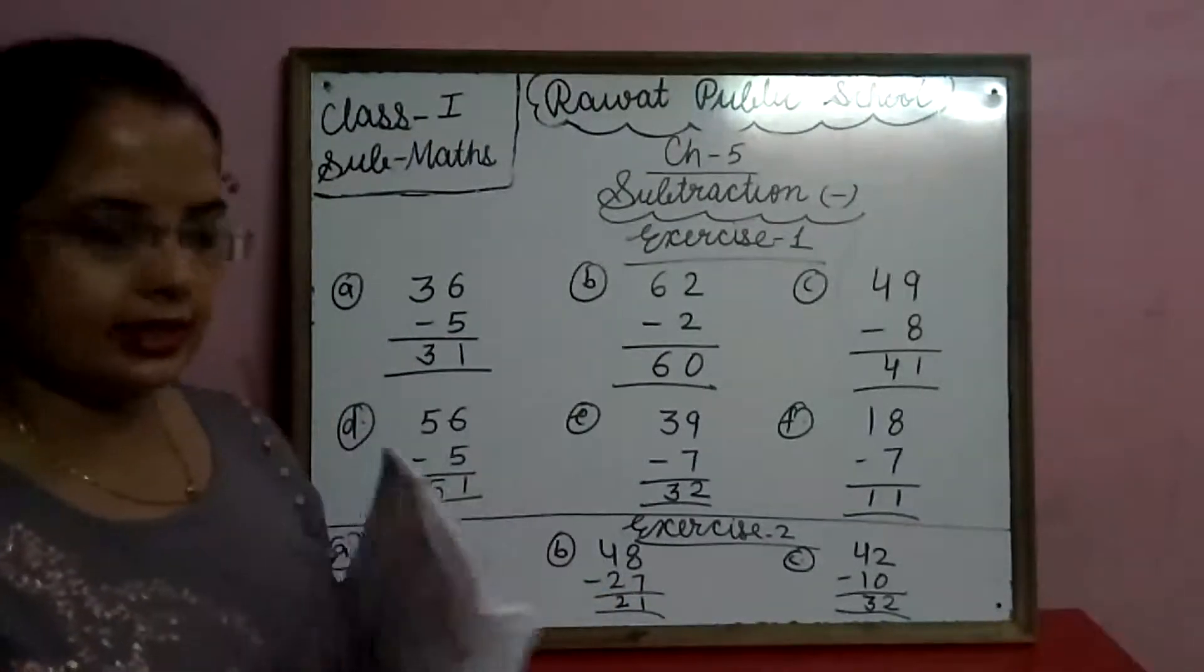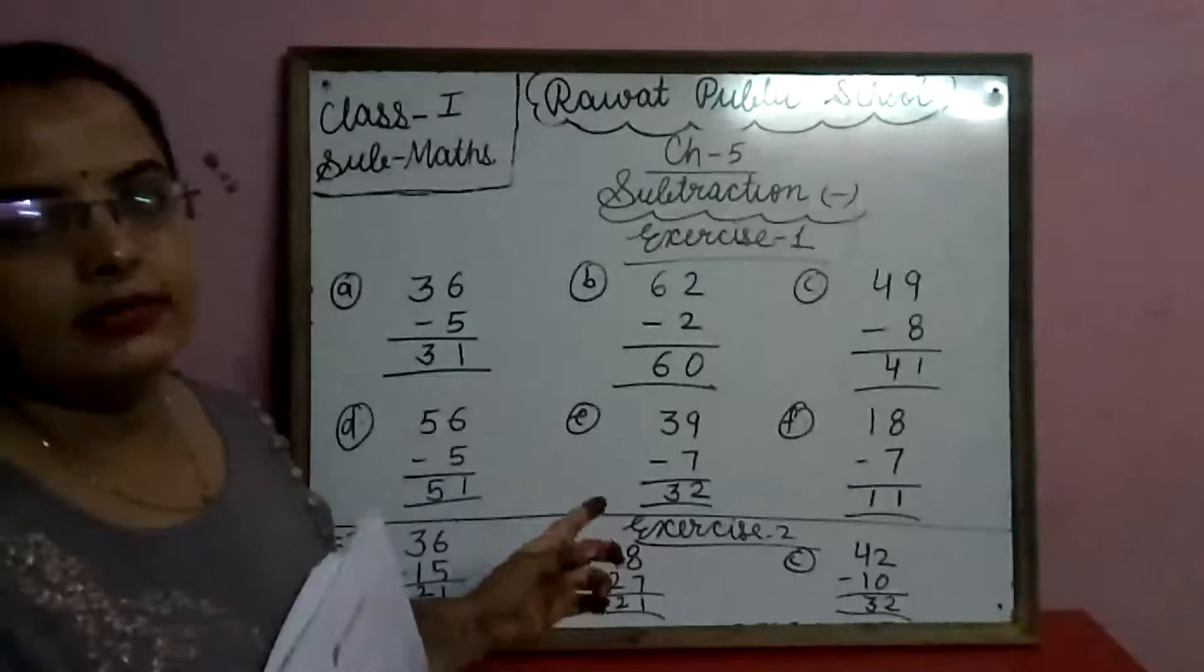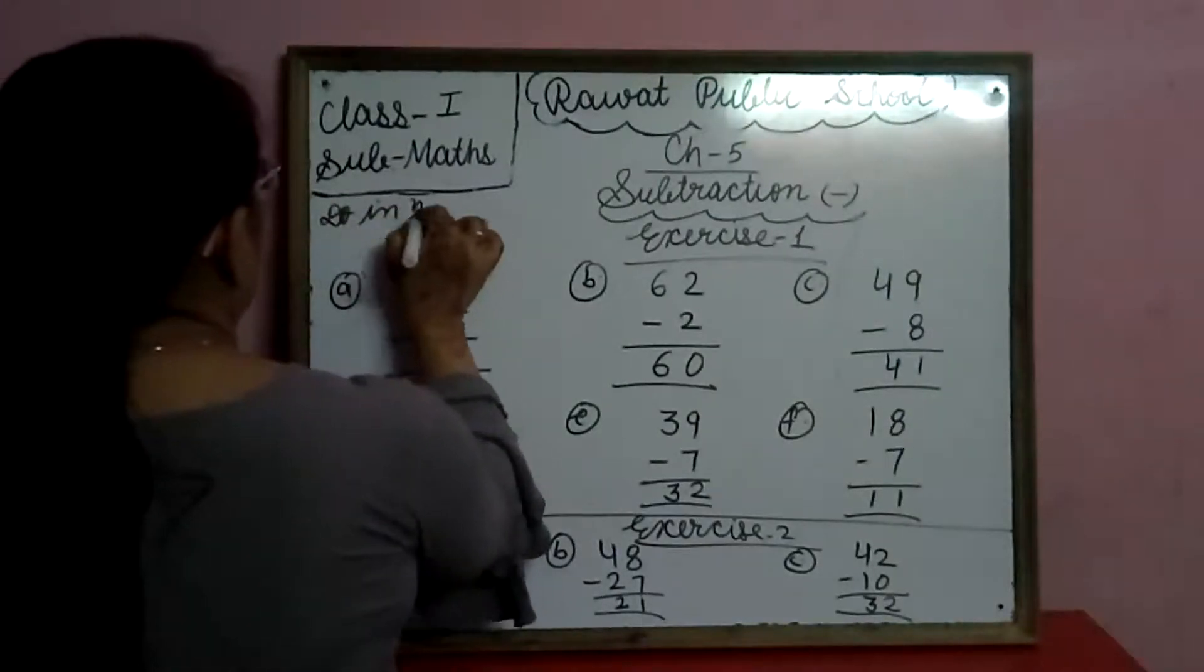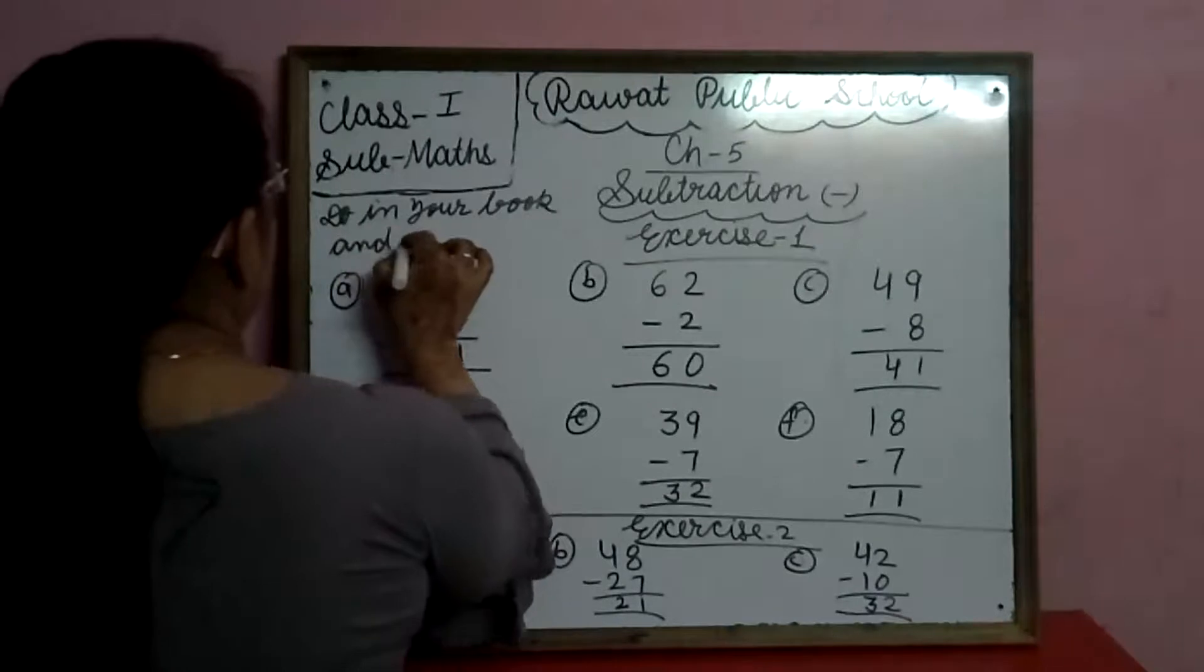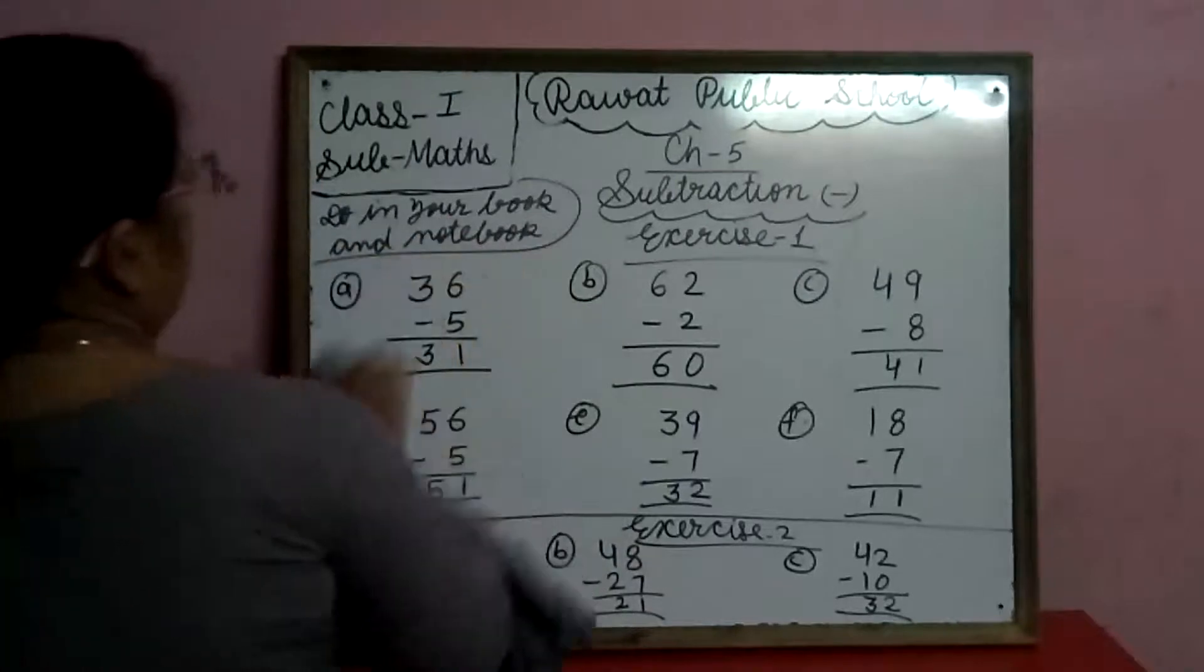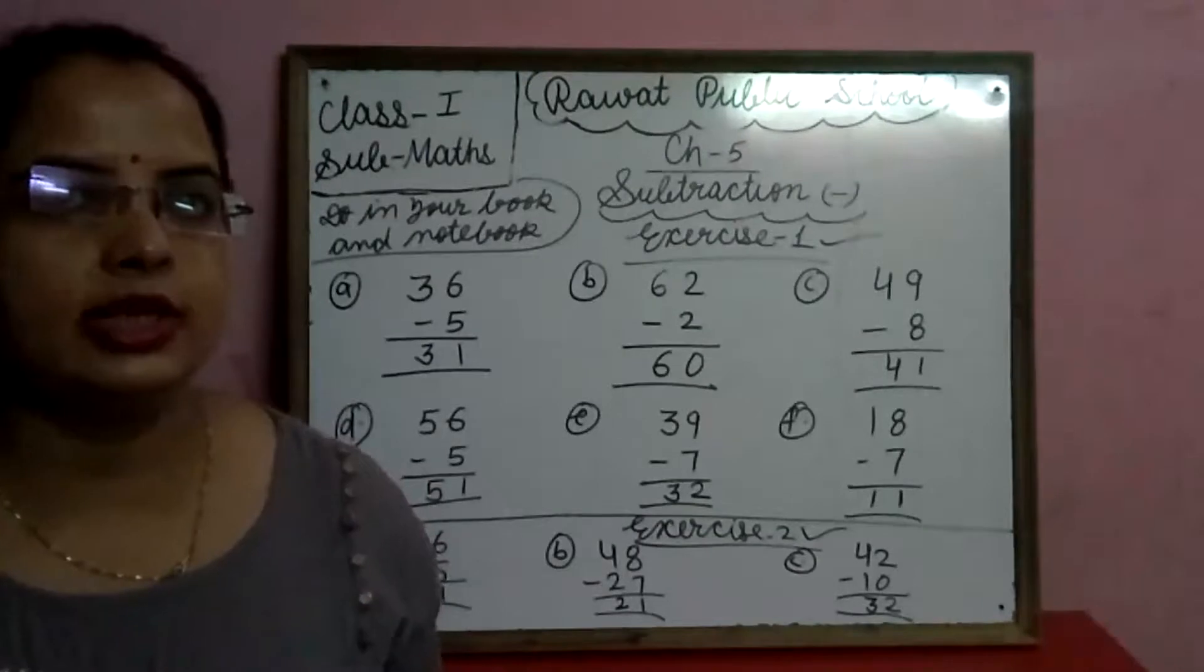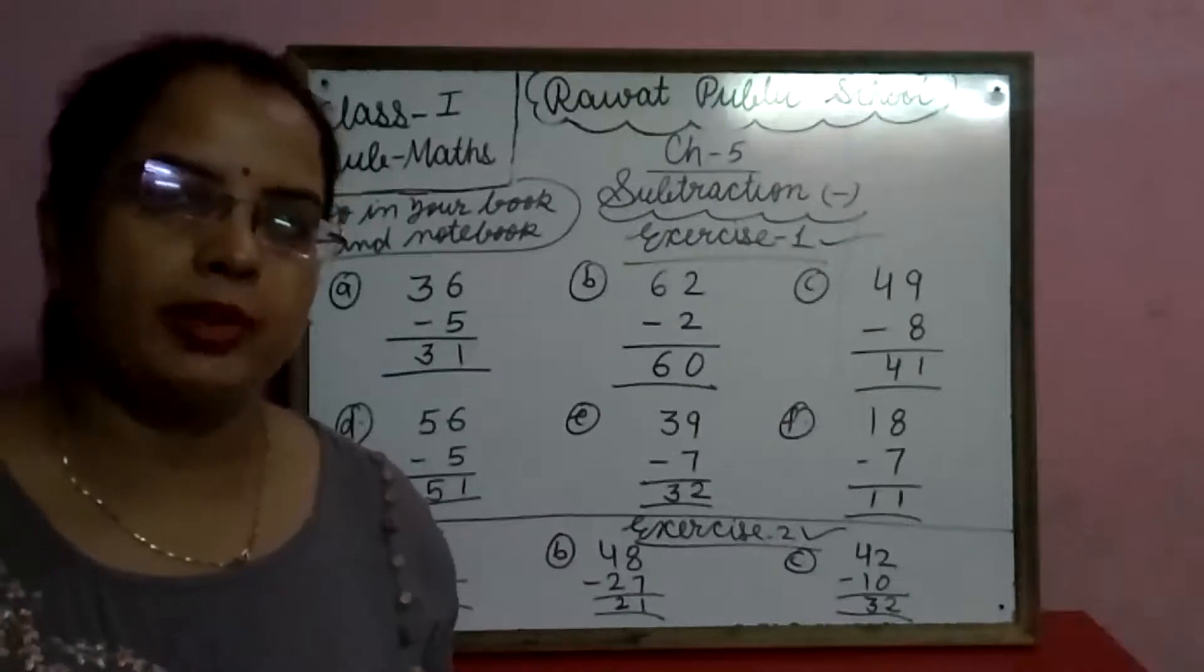So children, please do this work. Exercise 1 and Exercise 2 in your book and also notebook. Aapko Exercise 1 aur Exercise 2 aapko copy mei bhi karna hai aur book mei bhi karna hai. Do in your book and notebook. Exercise 1 and Exercise 2. Okay? 3 mei na aapko karwa diya hai. 3 aap self karengi ki bahut easy hai ye. So children, please do this work neat and clean, properly in your book and also notebook. Thank you.